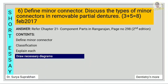Define minor connectors and discuss the types of minor connectors in RPD. For this refer chapter 21, component parts, page number 298. First define what is minor connector, then write the classification. There are four main types: clasp assembly minor connector, indirect retainer, denture base minor connector, and approach minor connector. Explain each in detail and also draw the necessary diagrams.